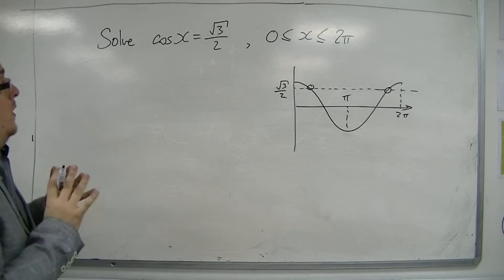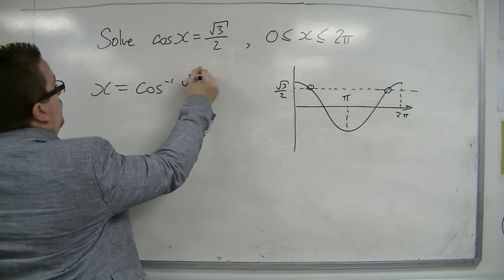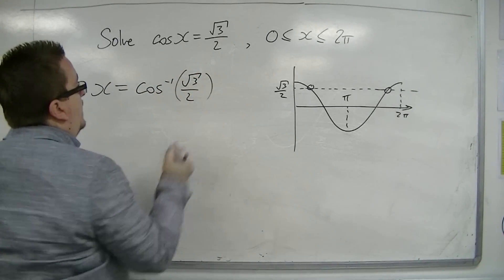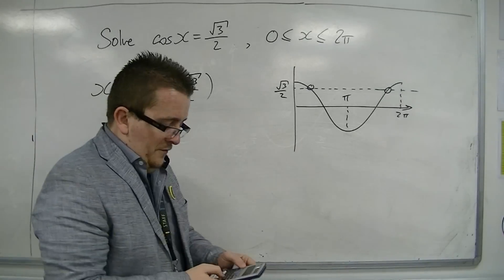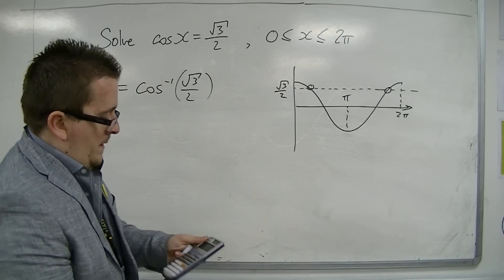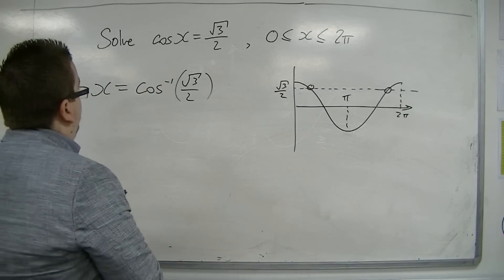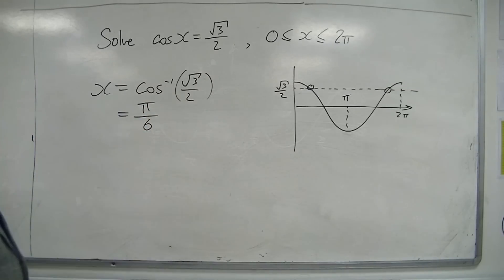Okay, now, when I inverse cosine root 3 over 2, the calculator's only going to give me one answer. So, inverse cosine of root 3 over 2 is π over 6, or one sixth π.